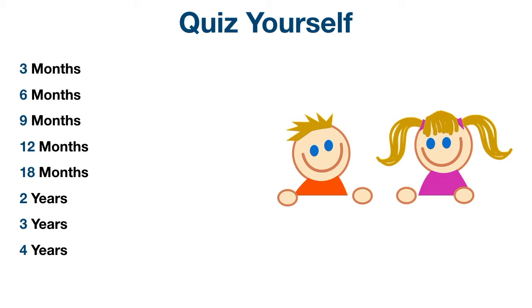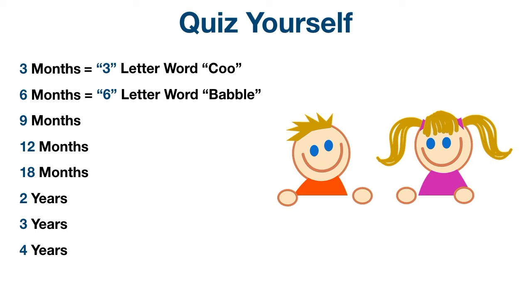Now it's time to quiz yourself. For three months, the trick is the three-letter word 'coo' — always think of coo at three months. For six months, the trick is the six-letter word 'babble' — always think of babble. For nine months, the trick is the nine-letter word 'imitation' — the imitation phase in which they imitate speech, non-speech sounds, actions, and gestures.